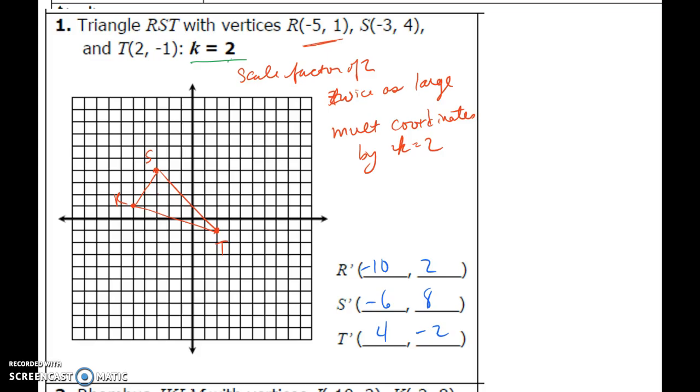And then we re-graph. So negative 10, 2, I'm going to try to shut up and graph. And you can do the same. So plotting R prime at (-10, 2), S prime at (-6, 8), and T prime at (4, -2).